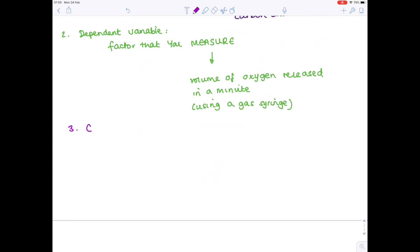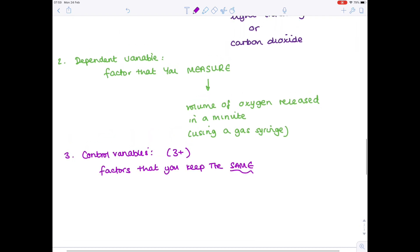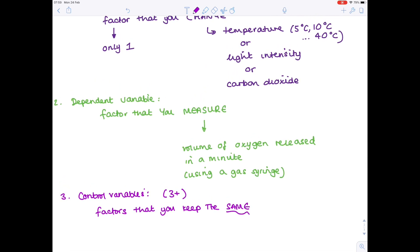And then lastly, our control variables. Notice these are factors which you keep the same. And you want at least three here, in case some of them are slightly dodgy. So thinking about what would be sensible here. Well, if we were to investigate how temperature affects the rate of photosynthesis, clearly it's important that we use the same light intensity and carbon dioxide levels.